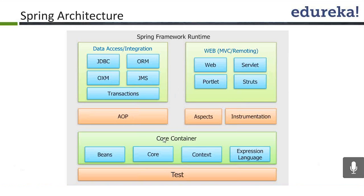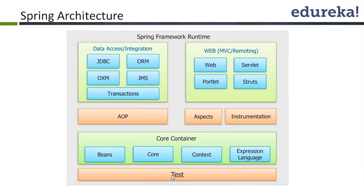The core container is the core of your Spring Framework and is a combination of four modules: Spring Core, Spring Beans, Spring Context, and Spring Expression Language — also called Spring EL. If you are familiar with JSP's Expression Language, you will feel at home with Spring EL. The Test module corresponds to unit testing as well as integration testing.